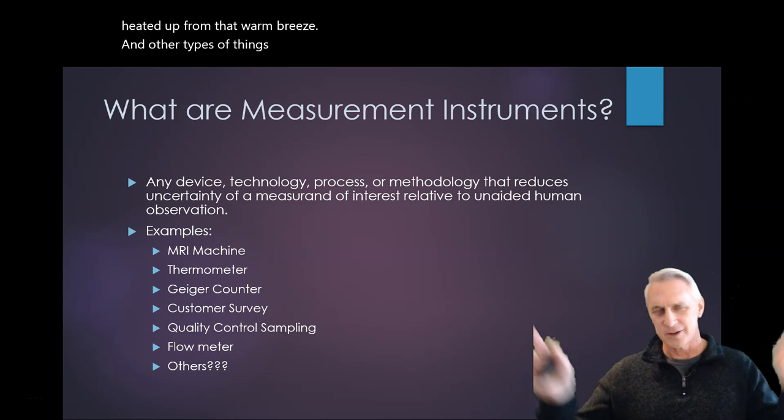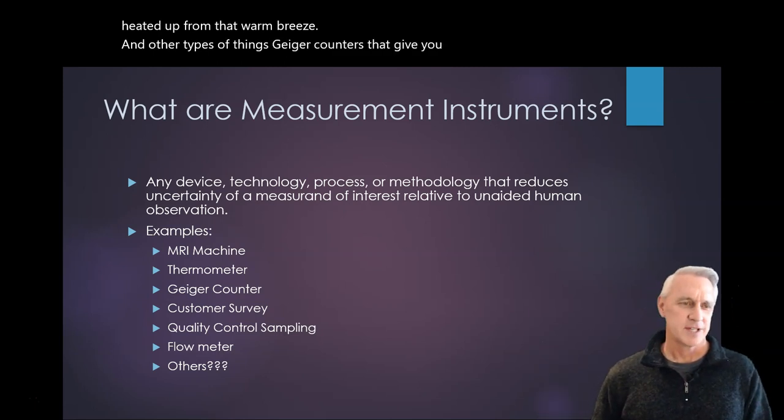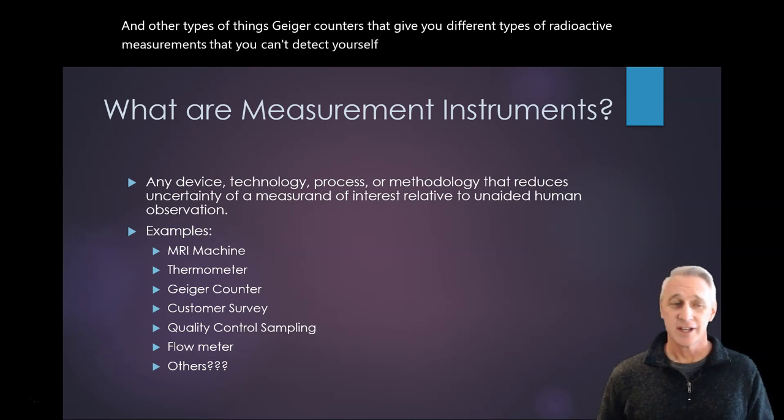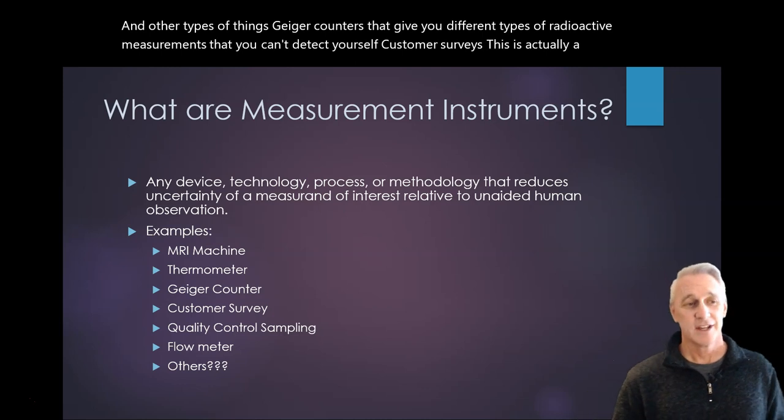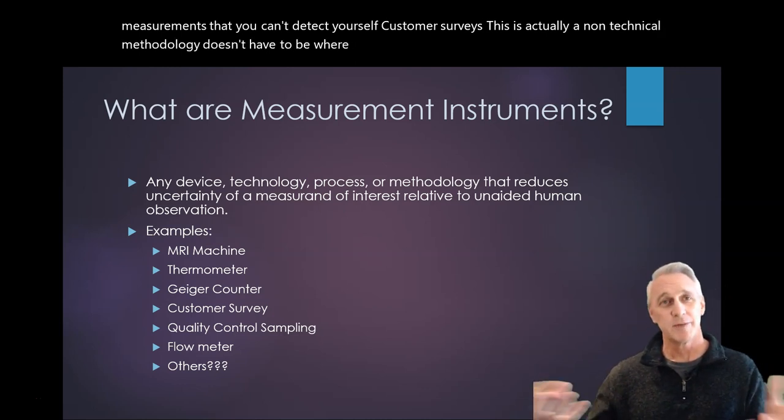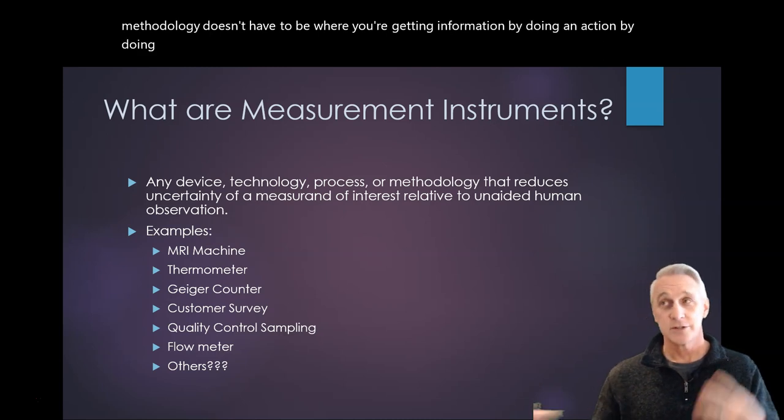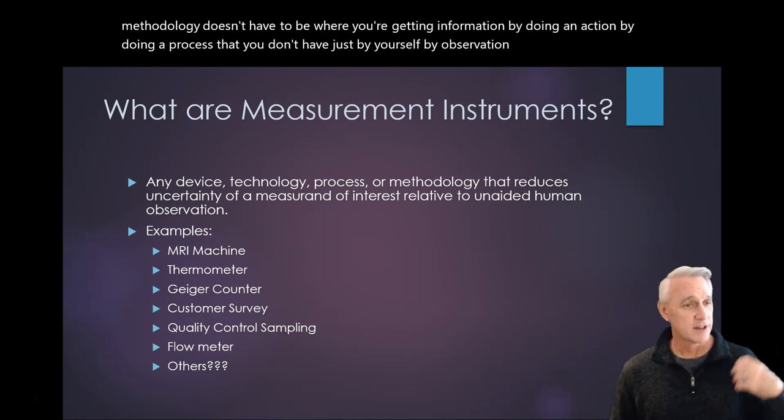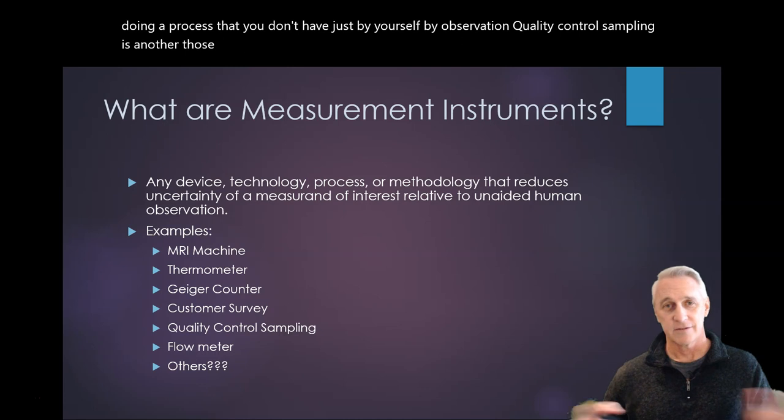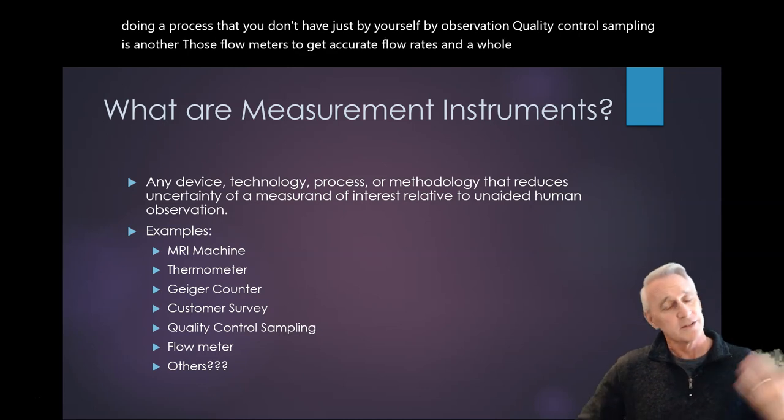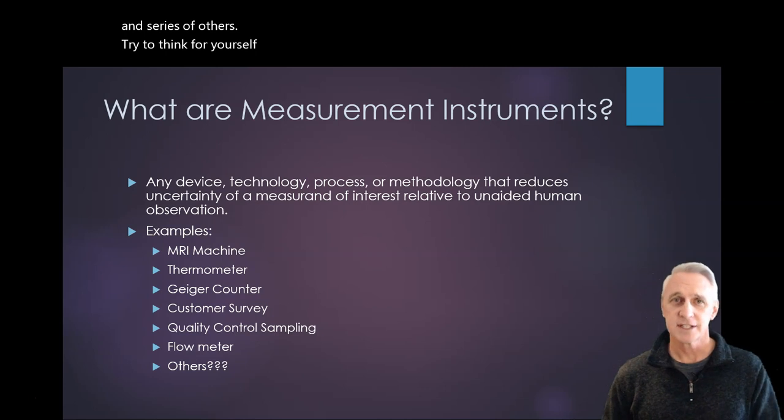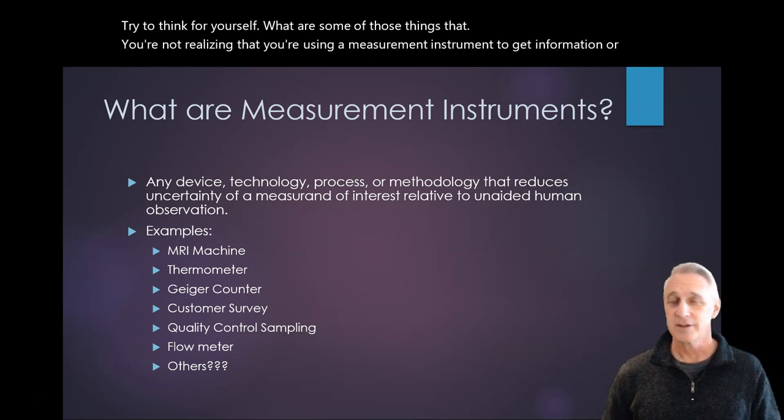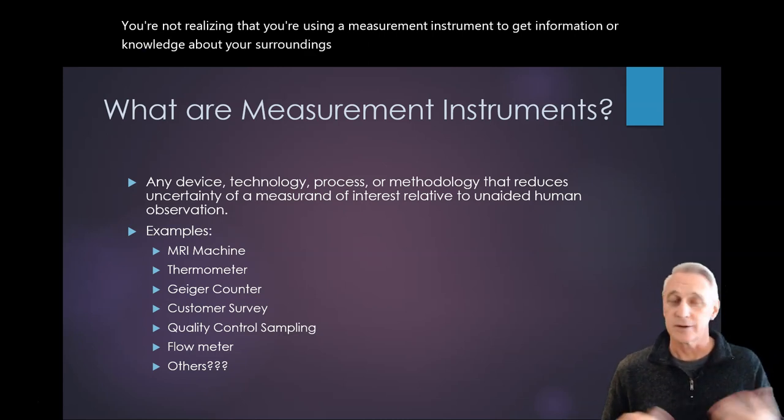And other types of things, Geiger counters that give you different types of radioactive measurements that you can't detect yourself. Customer surveys, this is actually a non-technical methodology, where you're getting information by doing an action, by doing a process, that you don't have just by yourself, by observation. Quality control sampling is another of those, flow meters to get accurate flow rates, and a whole series of others. Try to think for yourself, what are some of those things that you're not realizing that you're using a measurement instrument to get information or knowledge about your surroundings, or a process, or a company.